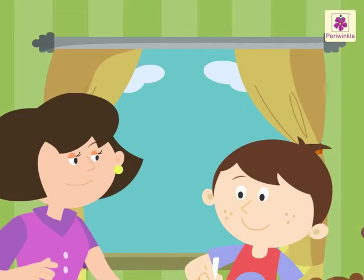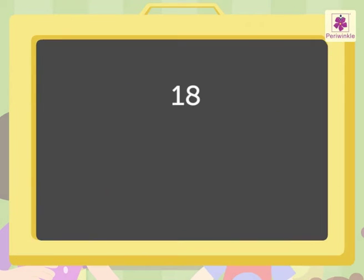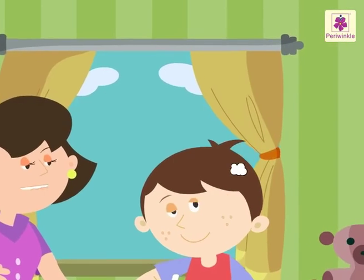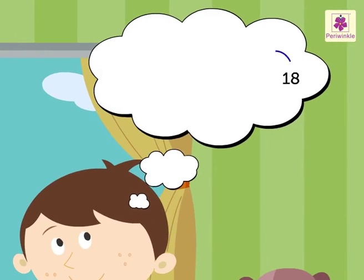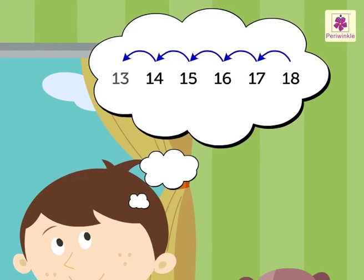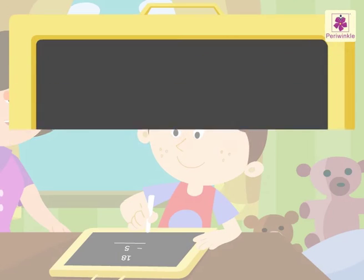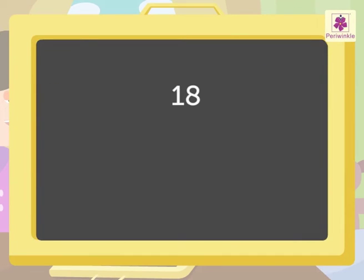Now, let's subtract another sum. 18 minus 5. First, think of number 18. Then count 5 steps backward from 18. 17, 16, 15, 14, 13. We get the difference as 13. Thus, 18 minus 5 is equal to 13.